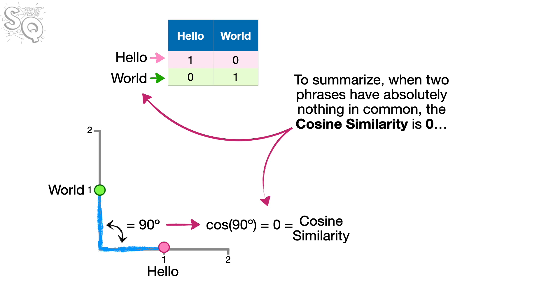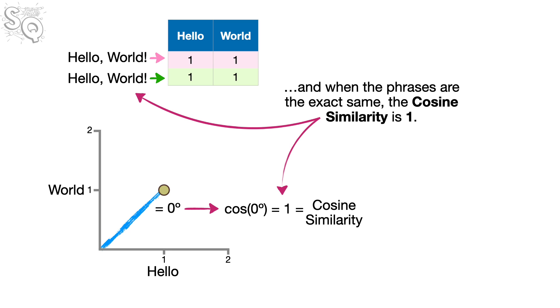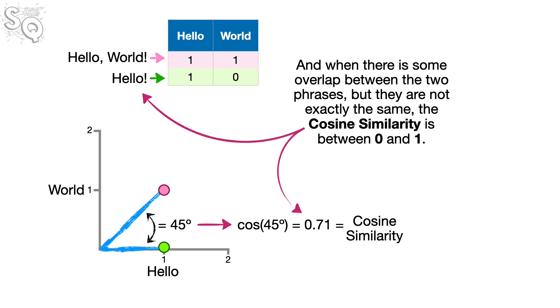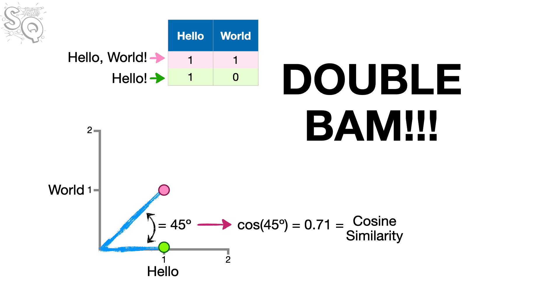To summarize, when two phrases have absolutely nothing in common, the cosine similarity is 0. And when the phrases are the exact same, the cosine similarity is 1. And when there is some overlap between the two phrases, but they are not exactly the same, the cosine similarity is between 0 and 1. Double bam!